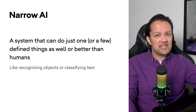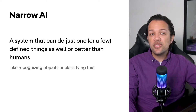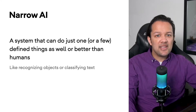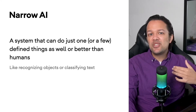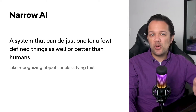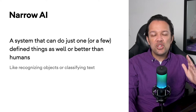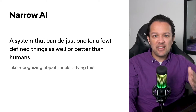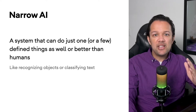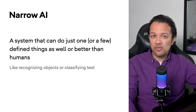A great example would be text classification. As a web developer, you may have at some point been asked to make a contact form where the user writes a message, that message is sent to the company, and someone then decides what sub team it should be forwarded to. With advances in technology, we can now train a system to automatically route the message to the correct team based on its content, given enough examples to learn from.